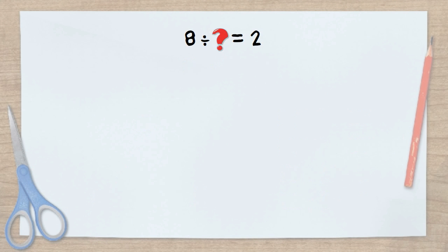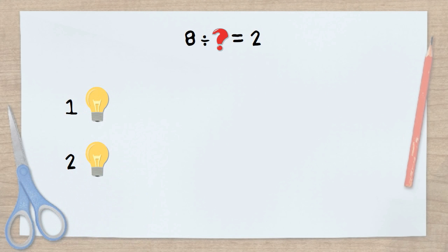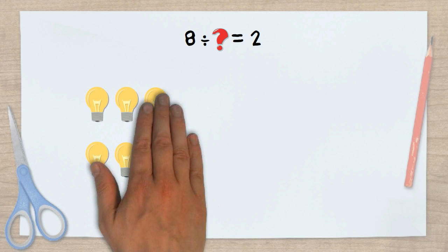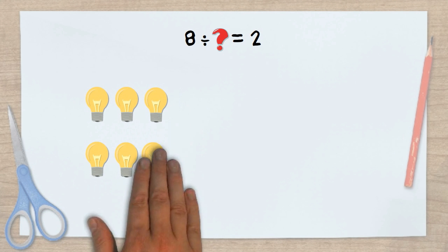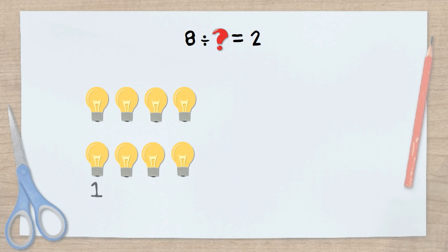In this problem, because it's division, we know there are going to be 8 objects total, and we're going to put them into two groups. So let's count: 1, 2, 3, 4, 5, 6, 7, 8. There are now 1, 2, 3, 4 objects in each of the two groups.